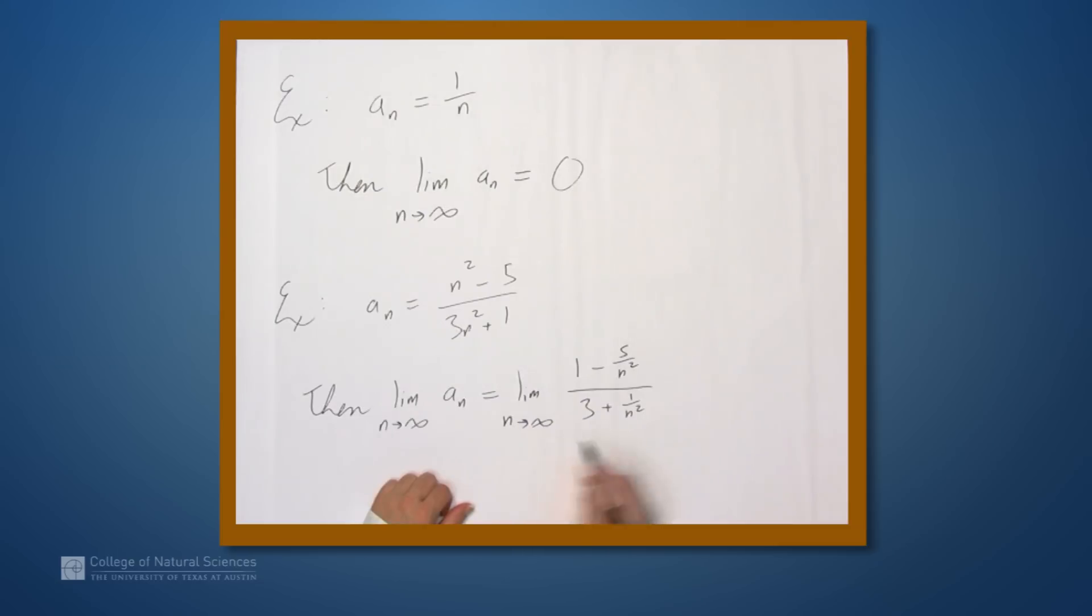Now, as n goes to infinity, this minus 5 over n² goes to 0, the plus 1 over n² goes to 0, so we can apply our familiar limit laws to get 1/3.